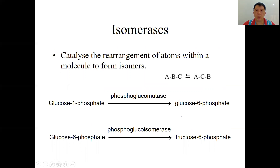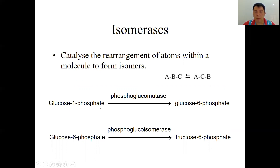Isomerases cause isomerization — they rearrange atoms within a molecule to form an isomer. For example, glucose-1-phosphate is catalyzed by phosphoglucomutase to form glucose-6-phosphate. So isomerization is taking place here.